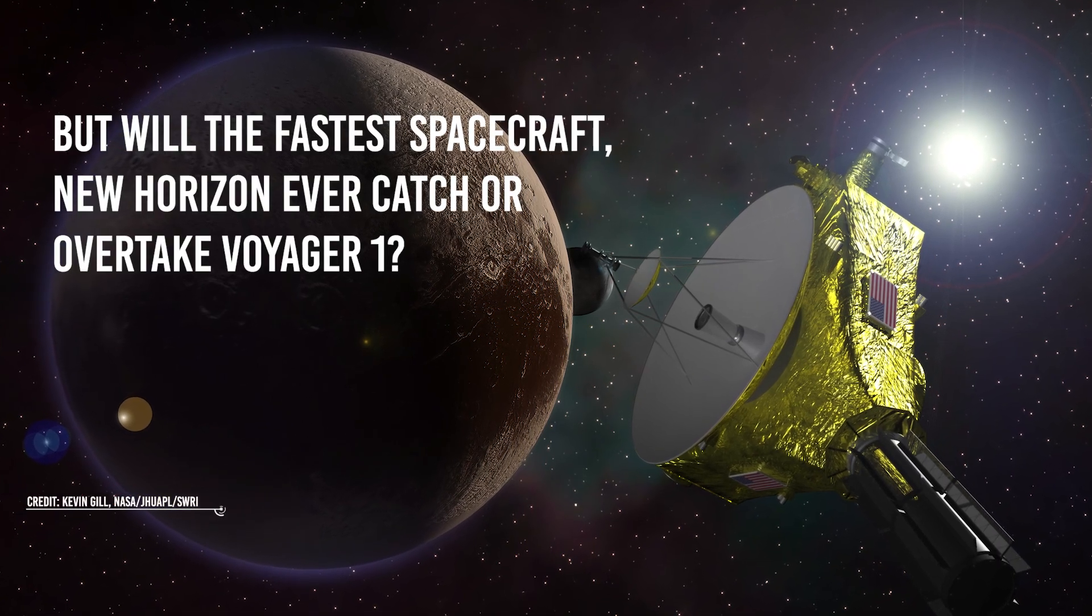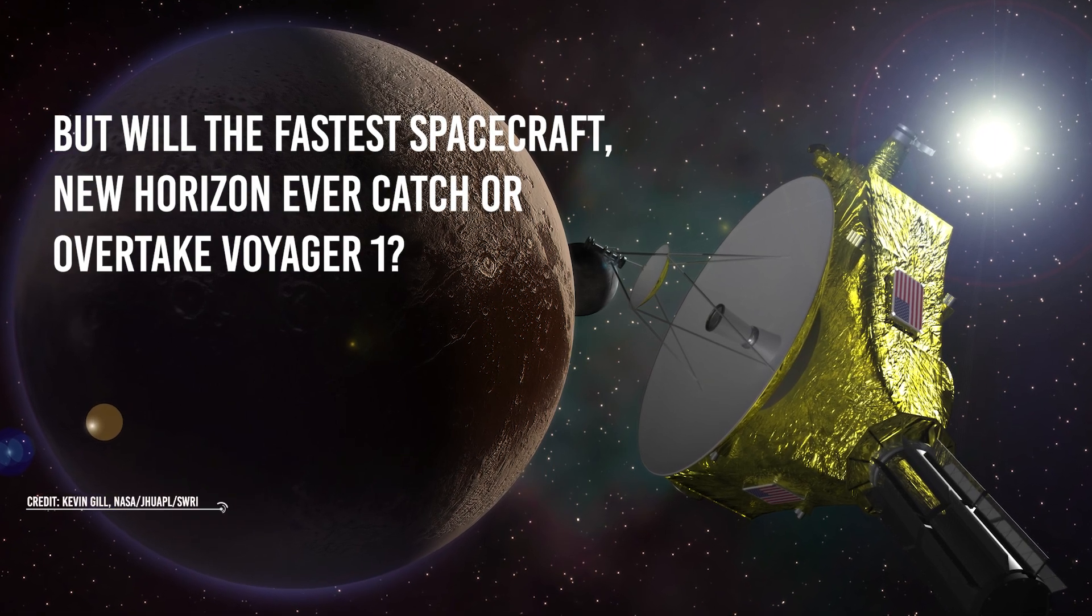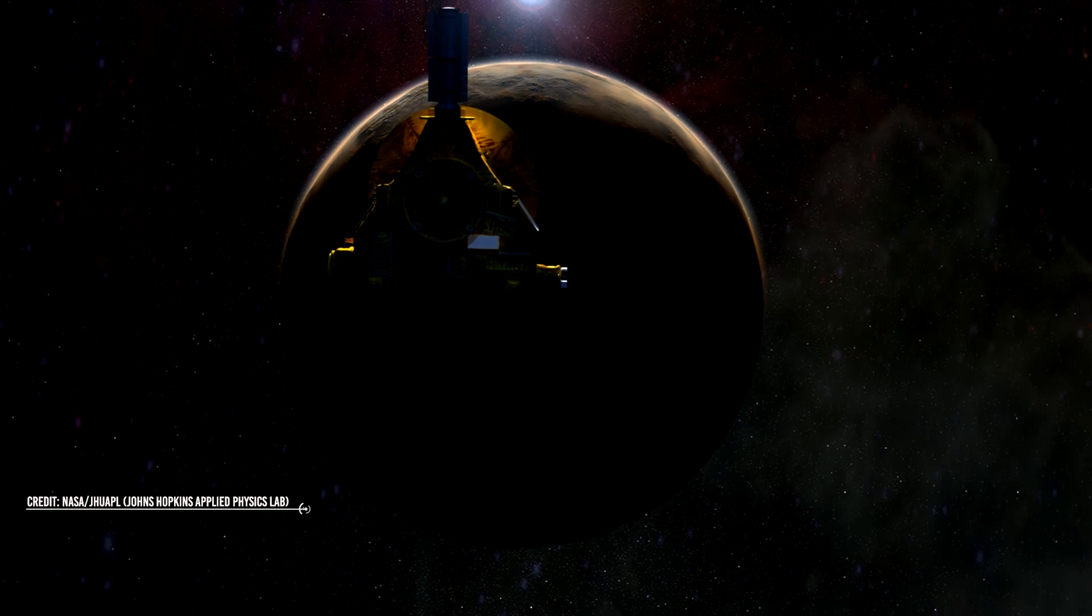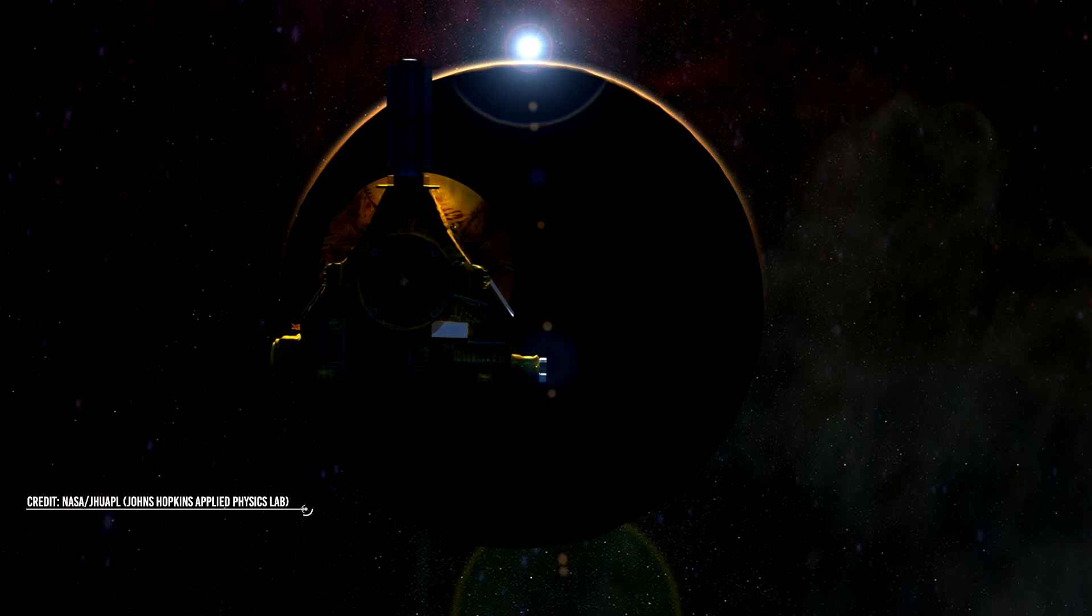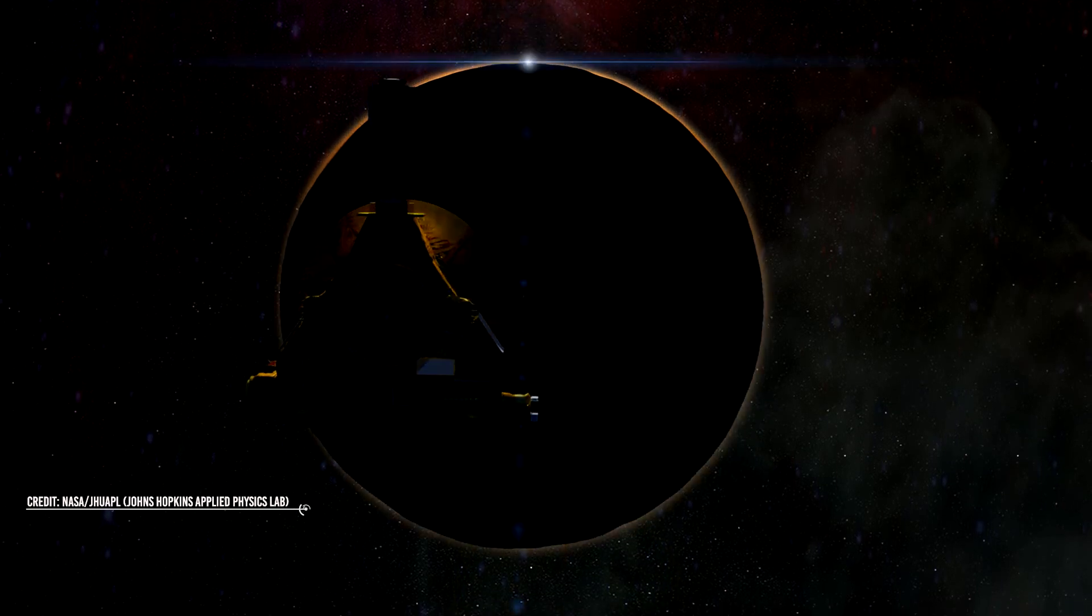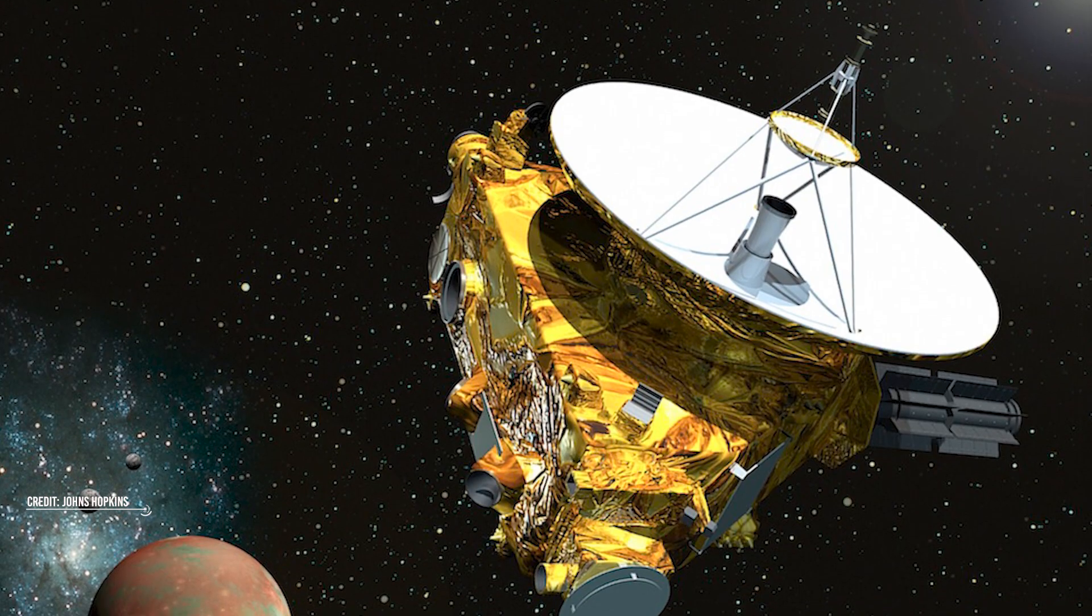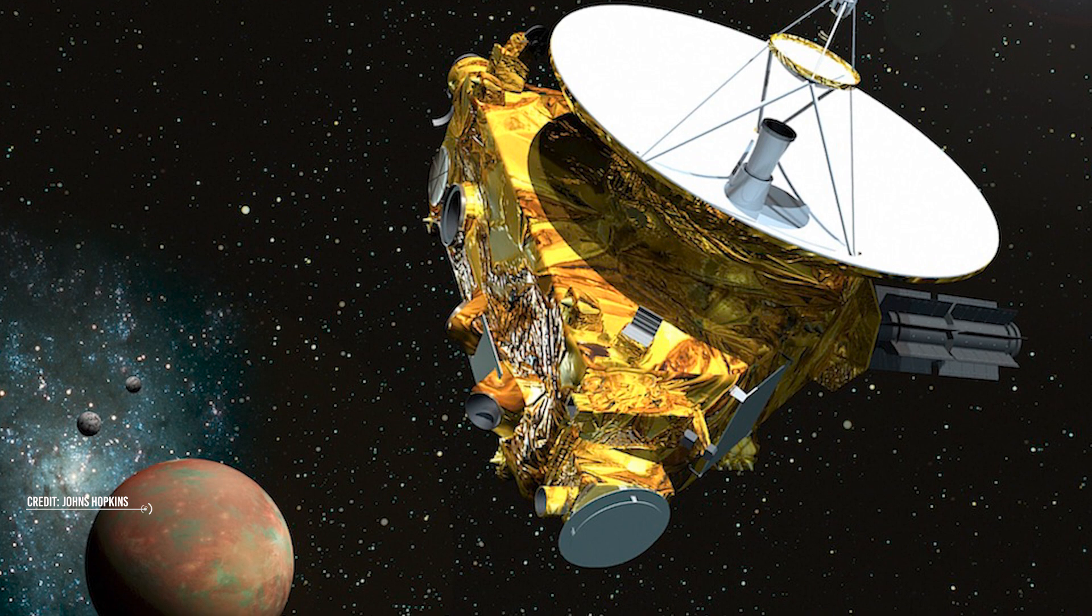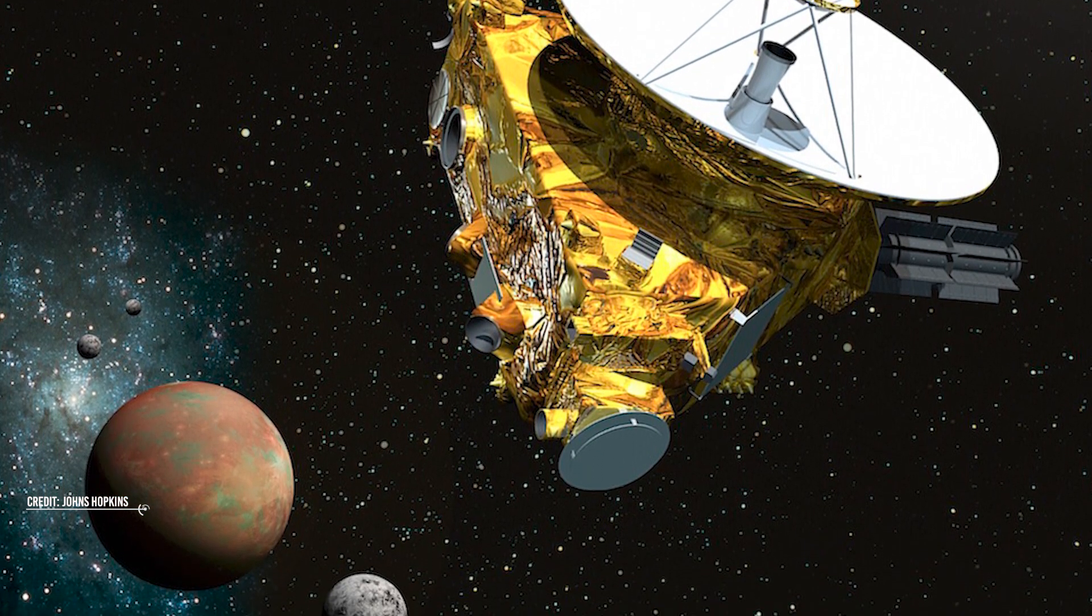But will the fastest spacecraft, New Horizons, ever catch or overtake Voyager 1? The short answer is no. Despite getting a boost by Jupiter during its journey to Pluto, it won't be able to catch Voyager 1. The New Horizons spacecraft was somewhat accelerated, but primarily diverted into a trajectory that would lead to a close flyby encounter with Pluto. Because it lacks a significant gravity assist, its speed will never allow it to catch up to Voyager 1 or 2.